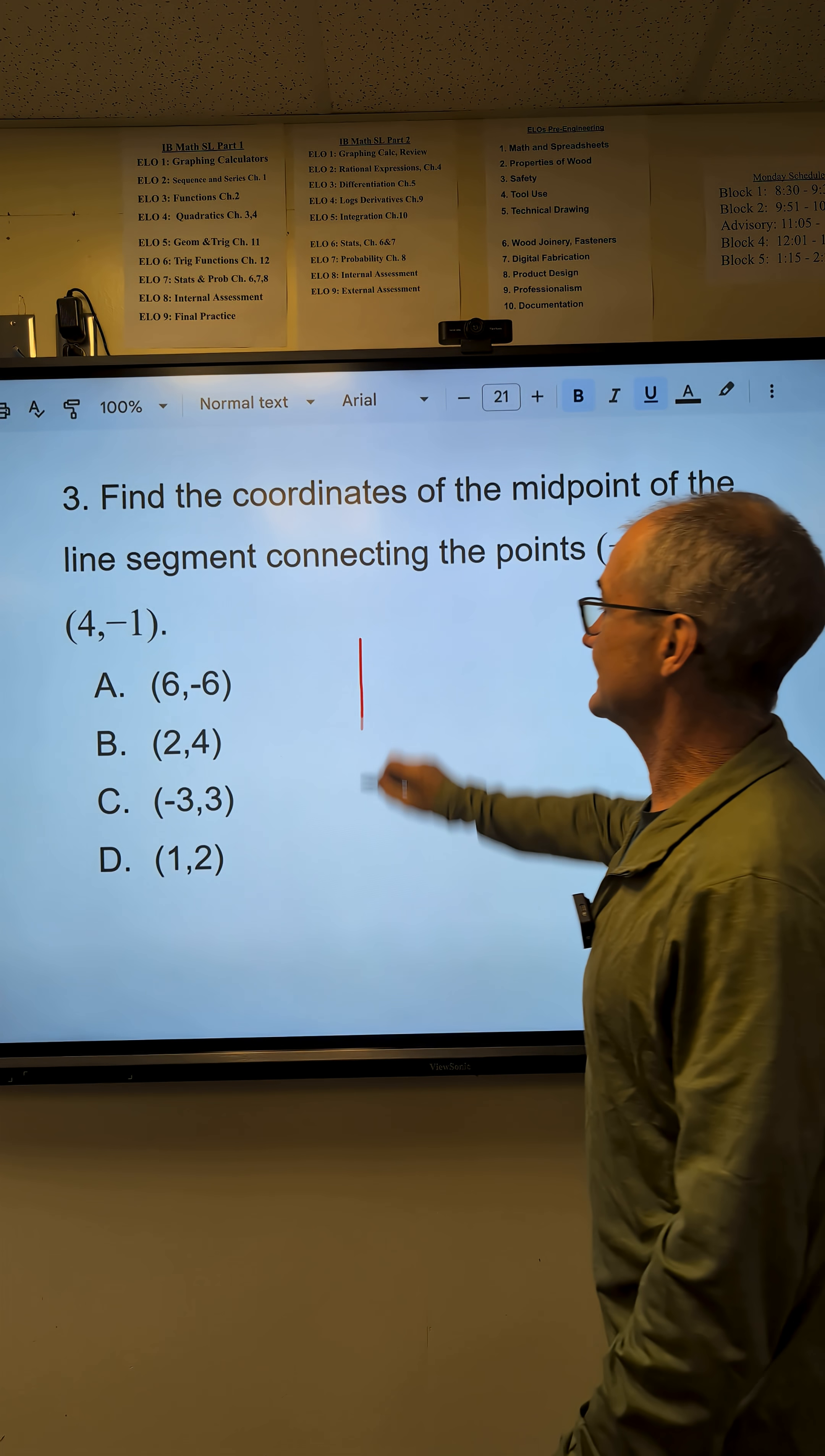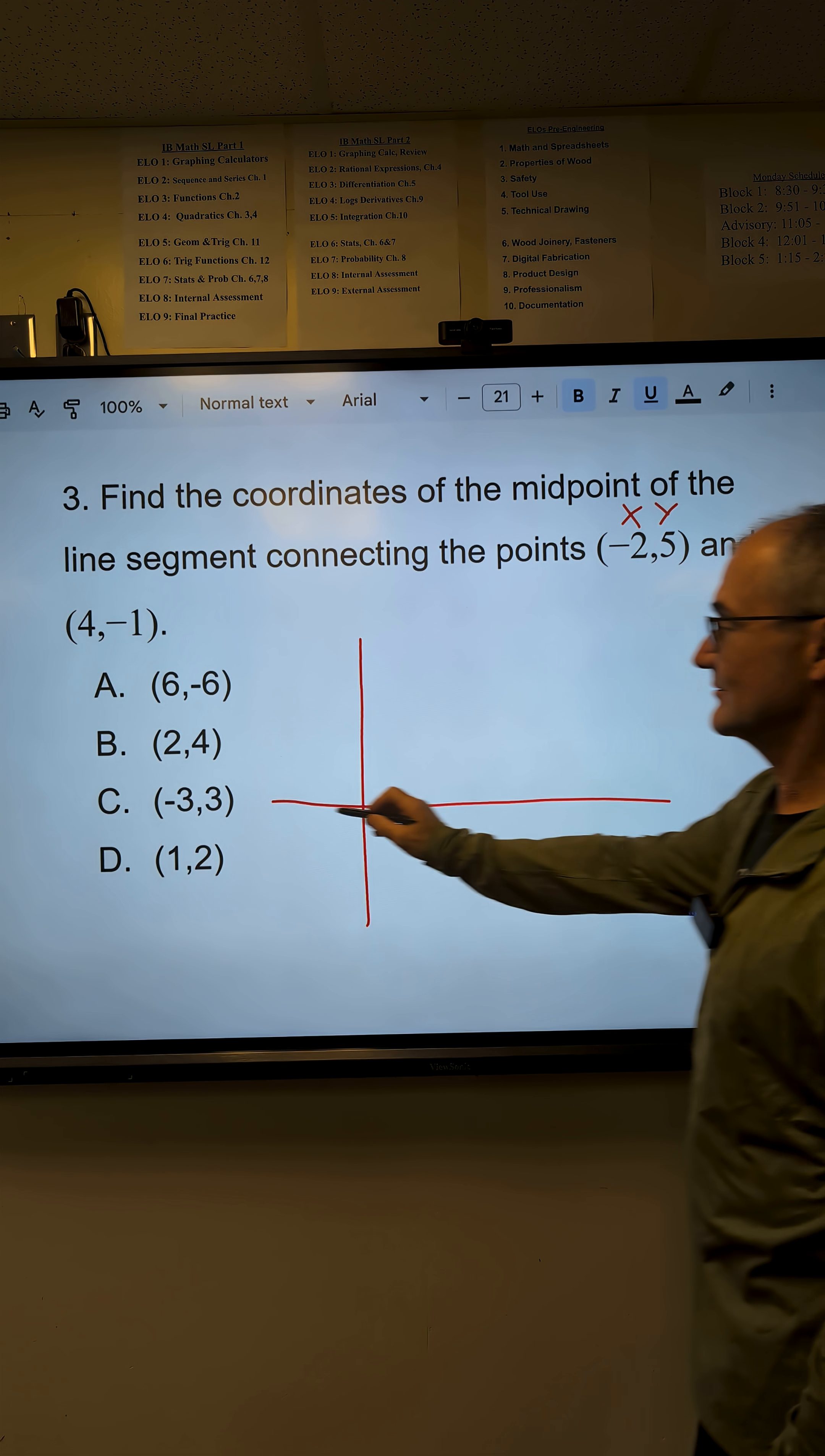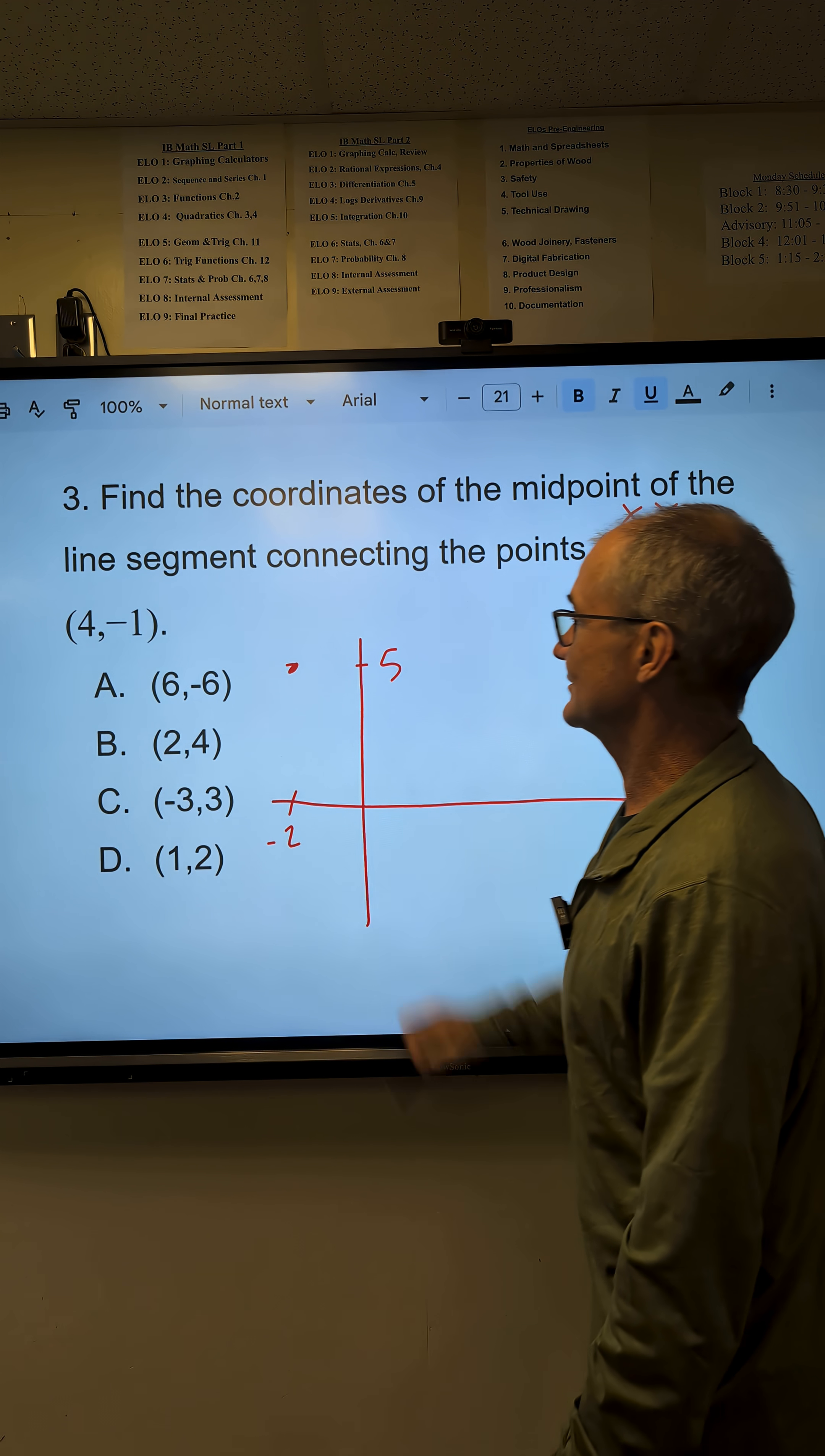Find the coordinates of the midpoint of the line segment between negative 2 and 5. This is x. This is y. I go over negative 2, up 5. There's one point.